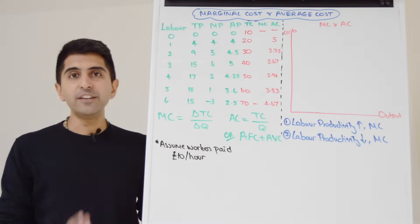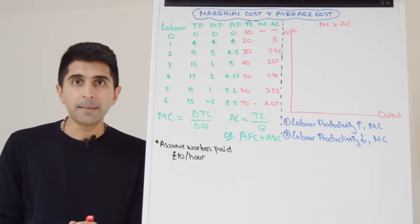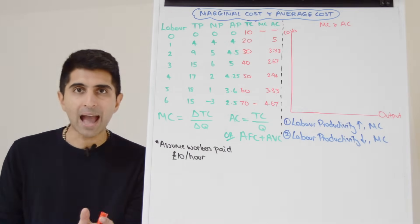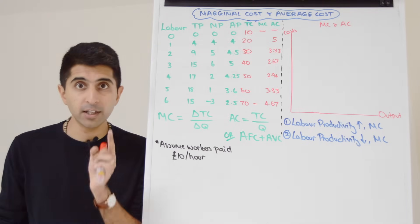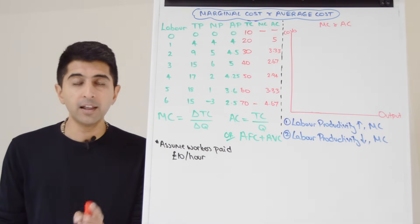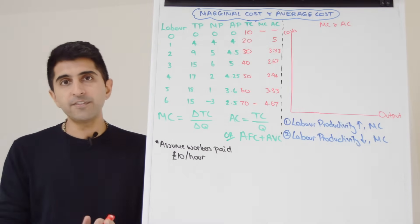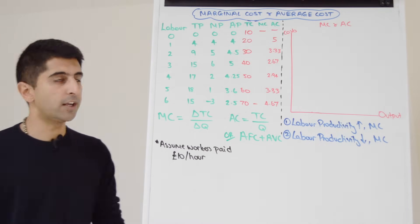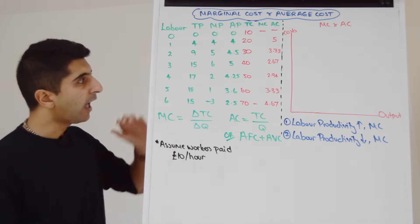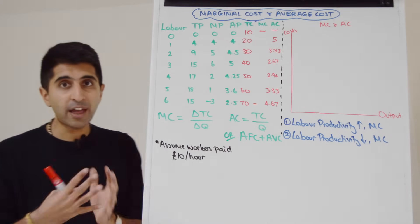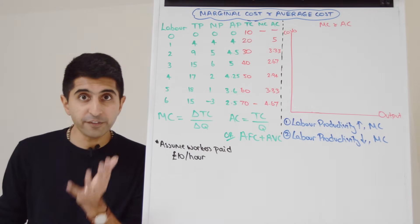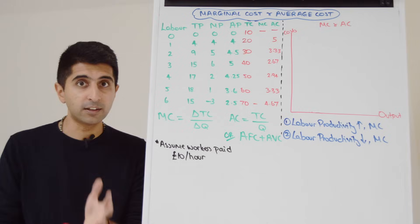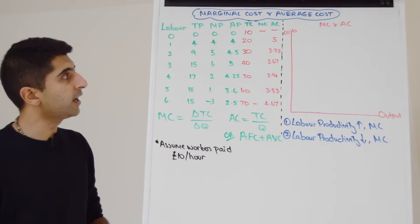Hi everybody. In this video, let's look at the shape of the marginal cost curve and the average cost curve for a firm operating in the short run. The shape of these curves is due to the law of diminishing marginal returns. I've put the table that we used in the very first video in this playlist on the board, where we illustrated the law of diminishing returns.